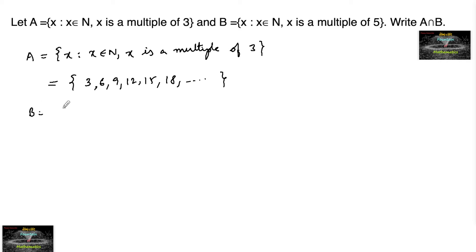And the set B is given x such that x is a natural number, x is a multiple of 5. So here we can consider multiples of 5: 5 ones are 5, 5 twos are 10, 5 threes are 15, 5 fours are 20, 25 and so on.